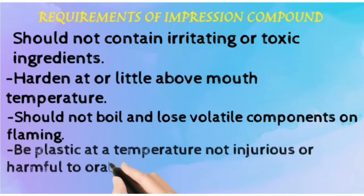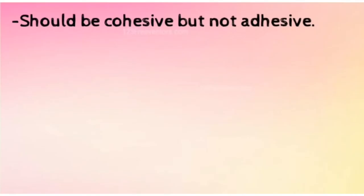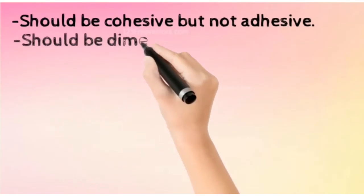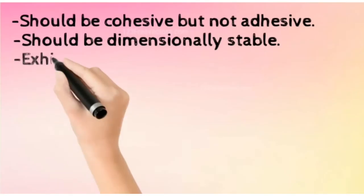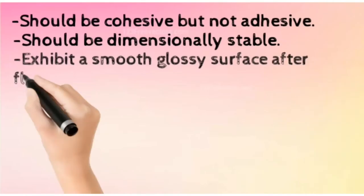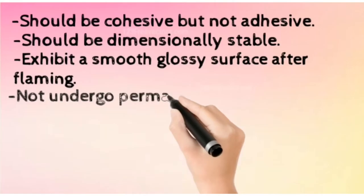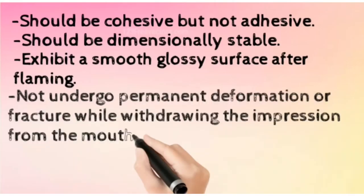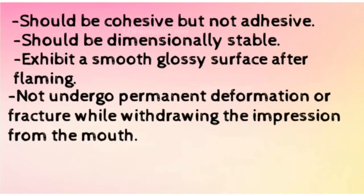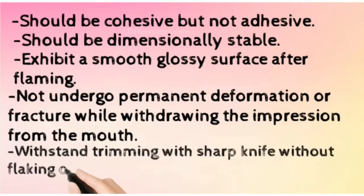It should be plastic at a temperature not injurious or harmful to oral tissues. It should be cohesive but not adhesive. It should be dimensionally stable — one of the important properties as well. It should exhibit a smooth, glossy surface after flaming. It should not undergo permanent deformation when withdrawing from the mouth. It should withstand trimming with a sharp knife without flaking or chipping after hardening.